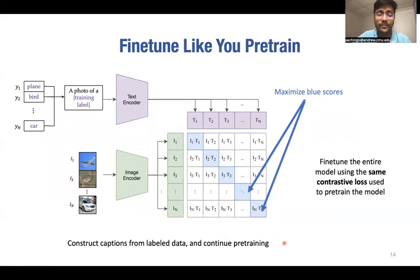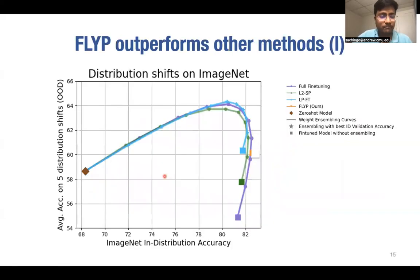Fine-tune like you pre-trained. Specifically, given the downstream labeled dataset, we continue optimizing the same loss as pre-training, that is the contrastive loss. We first cast these labels into text prompts, for example, for plane, bird, and car, we'll make these prompts of a photo of a plane, a photo of a bird, a photo of a car. And we continue optimizing the contrastive loss with the corresponding labeled images. And this very simple fix to the training procedure works well.